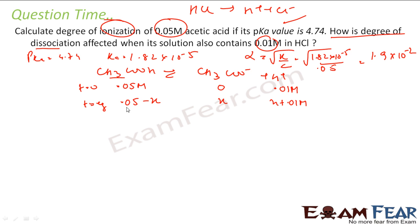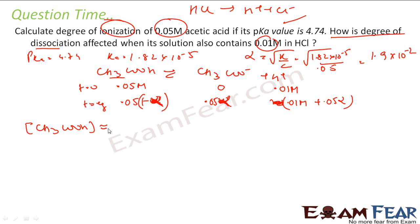Since we need to find the degree of dissociation, let's use alpha notation. CH₃COOH becomes c(1−alpha) ≈ 0.05, CH₃COO⁻ becomes c·alpha = 0.05·alpha, and H⁺ becomes 0.01 + 0.05·alpha. Since the reaction will proceed very little in the forward direction due to the common ion effect, we can assume CH₃COOH ≈ 0.05, CH₃COO⁻ = 0.05·alpha, and H⁺ ≈ 0.01.